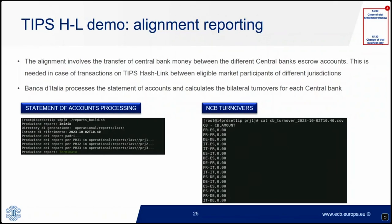The first end-of-day procedure is alignment, triggered in case of transactions between eligible market participants of different jurisdictions. To perform alignment, Banca d'Italia processes the statement of accounts, calculates bilateral turnovers, and sends a report to each central bank with amounts to be transferred to the other central bank's escrow accounts. The updated balance of the central bank's escrow accounts then corresponds to the amount to be defunded to market participants in T2. In our example, no cross-border transaction took place, so turnovers amount to zero.